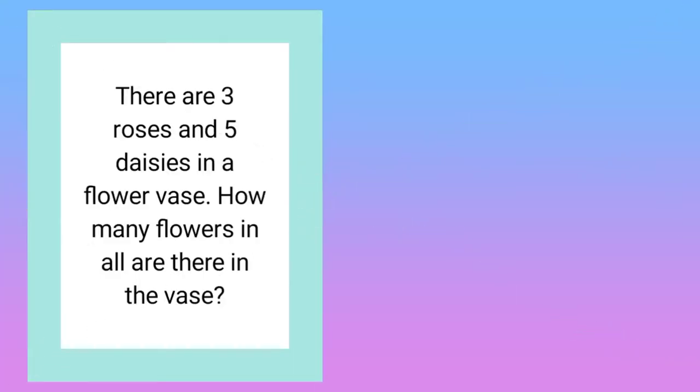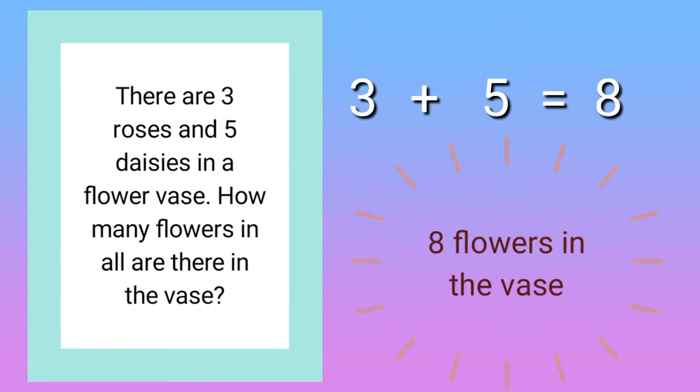There are three roses and five daisies in a flower vase. How many flowers in all are there in the vase? The given number facts are 3 and 5. 3 plus 5 equals 8. So, there are 8 flowers in the vase.